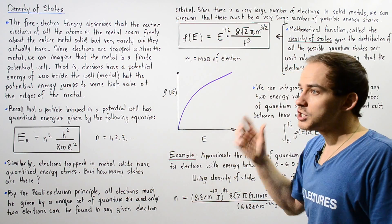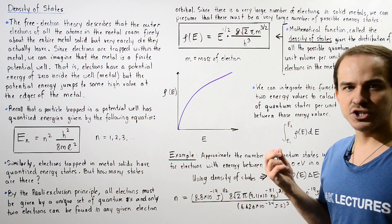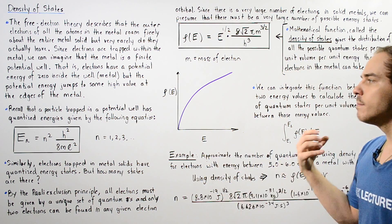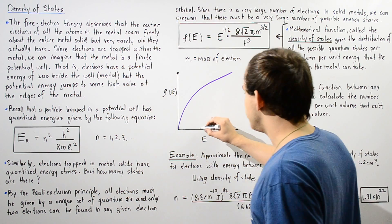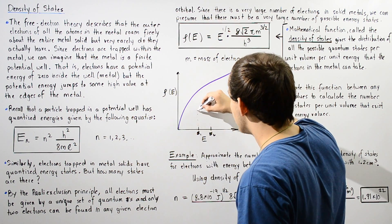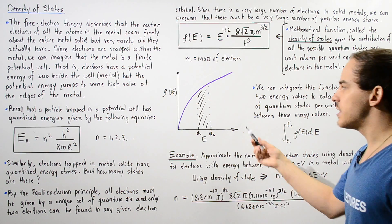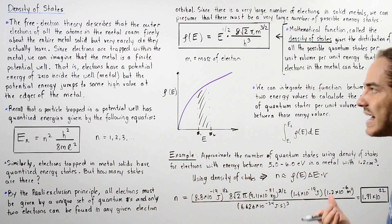This density of states function is very useful. We can integrate it between any two energy values to calculate the number of quantum states per unit volume that can exist between those energy values. If we then multiply by the volume of the metal, that gives us the total possible number of quantum states the electron can take. For example, integrating between energy E1 and E2 gives the number of quantum states per unit volume, and multiplying by the known volume of the metal solid gives us the total count of possible quantum states.